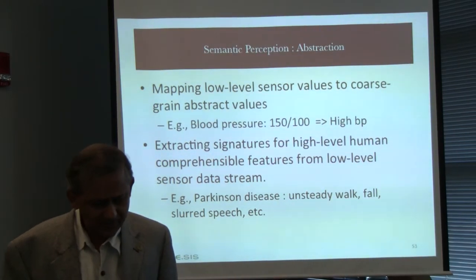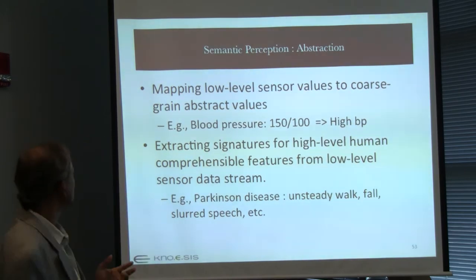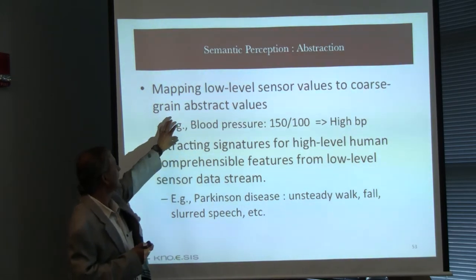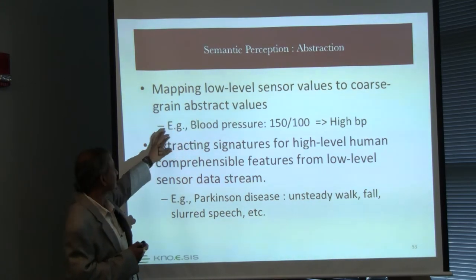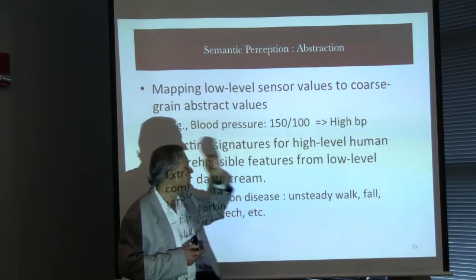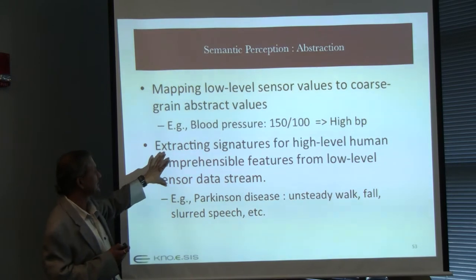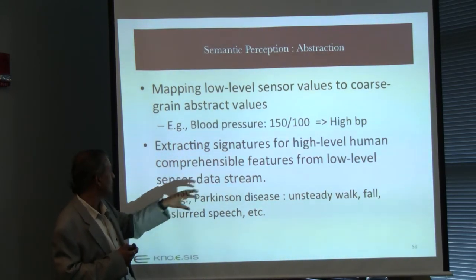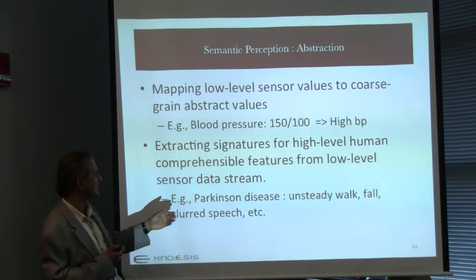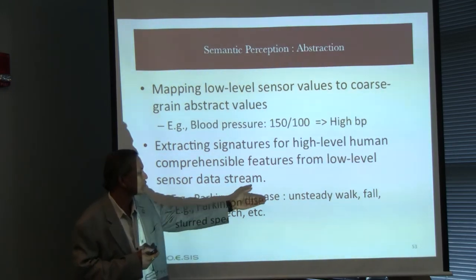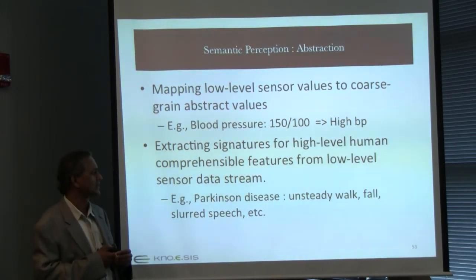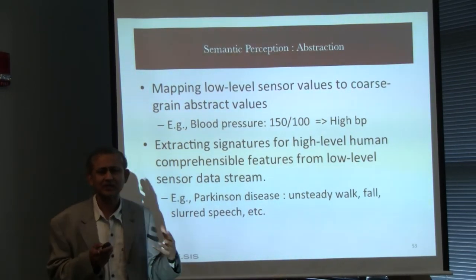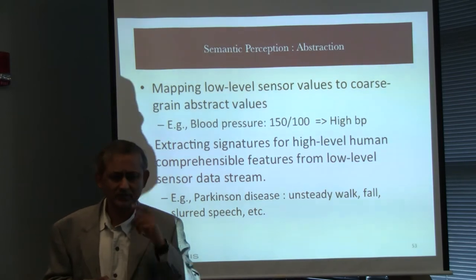Semantic perception basically maps low-level sensor values to coarse-grained abstract values — for example, a raw reading to high blood pressure. It extracts signals and high-level human-comprehensible features from low-level sensor data — for example, in the case of Parkinson's disease, helping identify an unsteady walk, potential for falls, and slurred speech by analysis of signals.